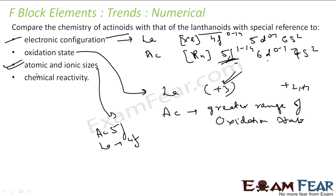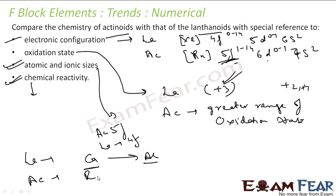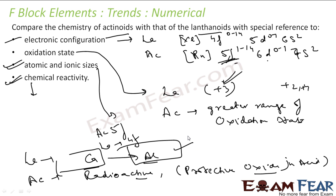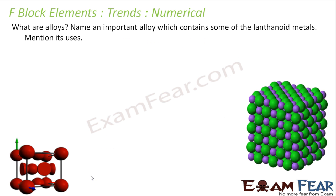Regarding chemical reactivity: earlier members of lanthanides behave like calcium, and later members behave like aluminium. Actinides are highly radioactive. Alkalis have less impact on actinides because actinides form a protective oxide layer when reacted with acids. Lanthanides are not all radioactive — only promethium is radioactive — but all actinides are radioactive.